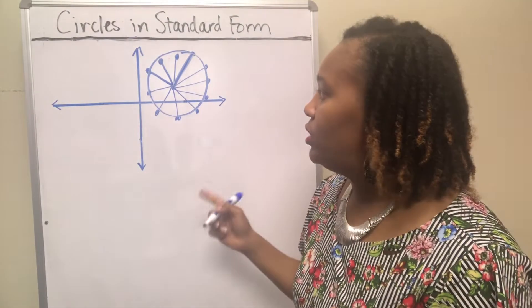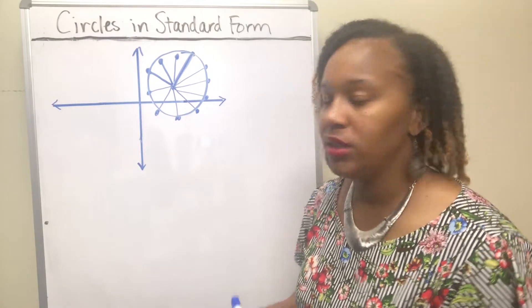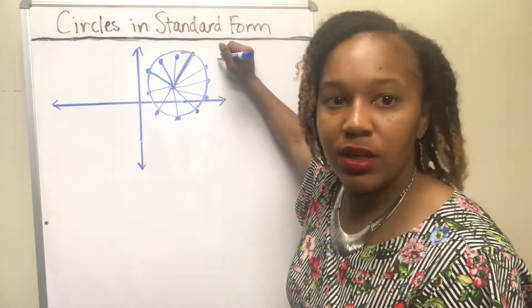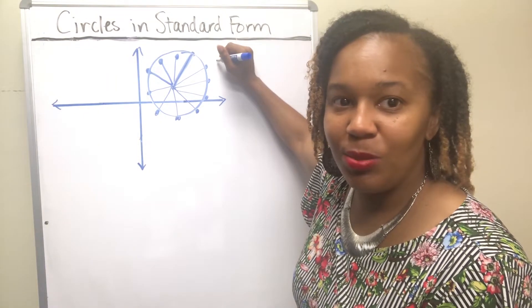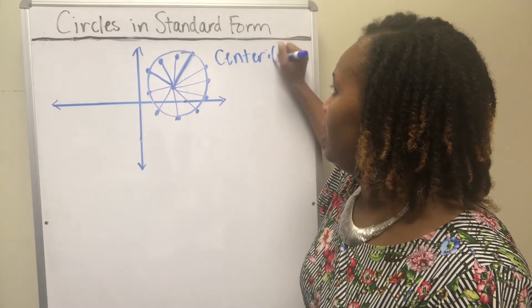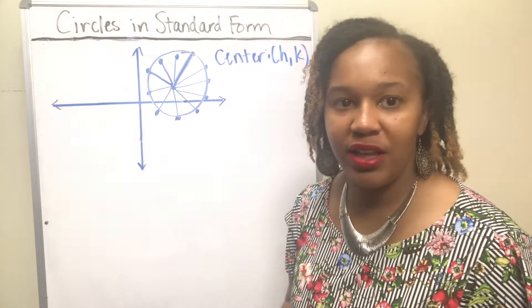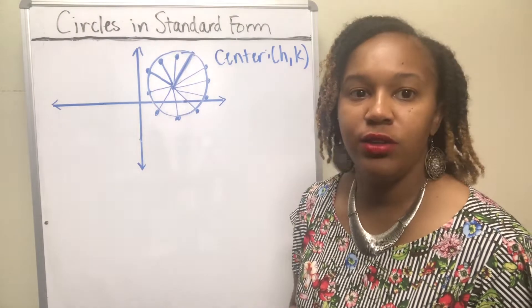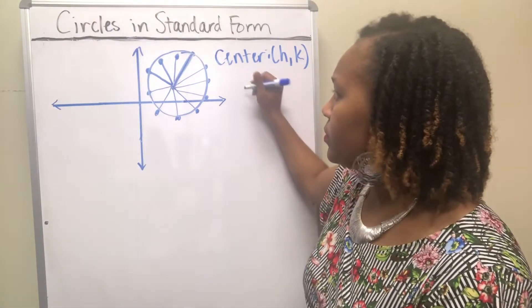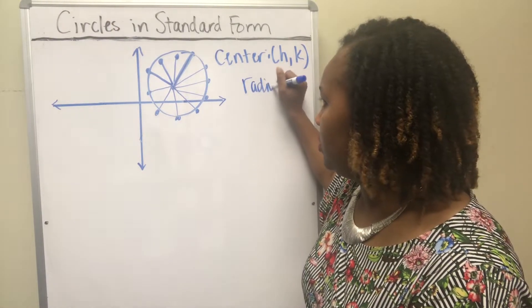Now I want to figure out how to write the equation of the circle. For consistency with most textbooks, I'm going to call the center H, K — an ordered pair where H represents the X value and K represents the Y value of the center. And I'm going to call the radius R.